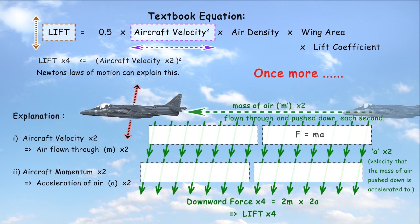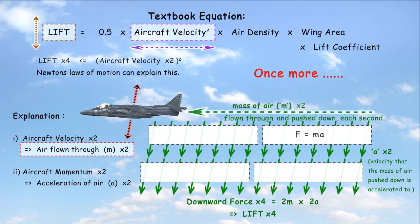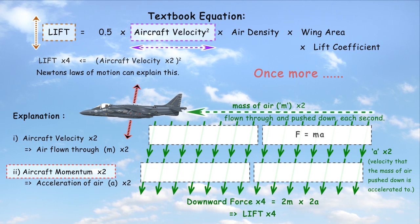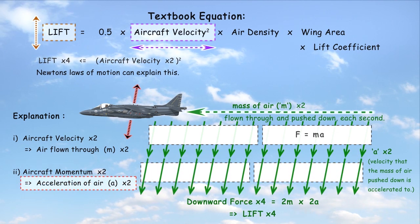In summary, the harrier, while flying twice as fast, flies through twice the amount of air. Due to its greater momentum, the harrier then accelerates this air downwards over twice as fast.